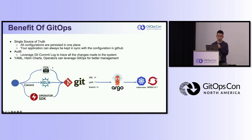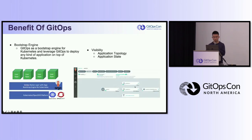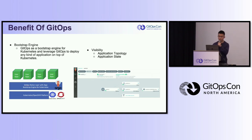With GitOps, no matter what kind of tool you are using, you can always leverage Flux or Argo CD to deploy your apps across different Kubernetes clusters. Another benefit is that if you want to deploy or manage apps on a Kubernetes platform, you don't need to install many components — you only need to deploy GitOps. With just Kubernetes and GitOps tools, you have a bootstrap engine for your platform.